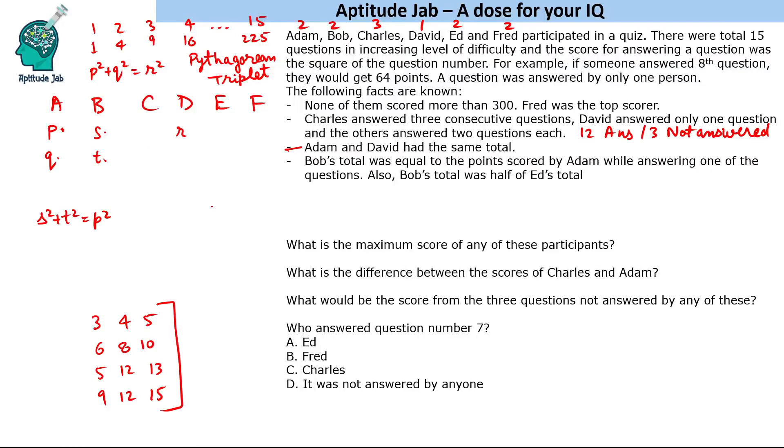The only value which fits is 3, 4, 5 and 5, 12, 13. 3² + 4² = 5², and 5² + 12² = 13².